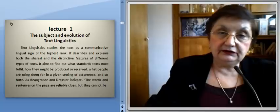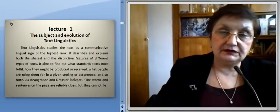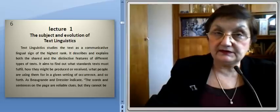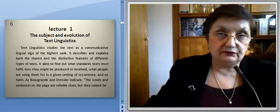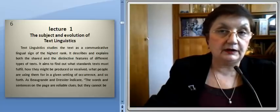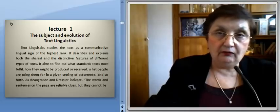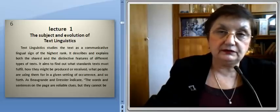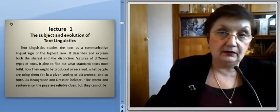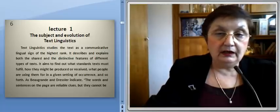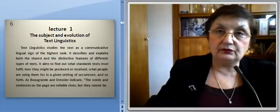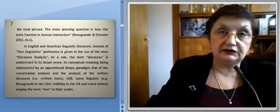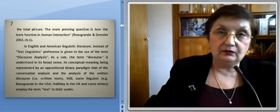The topic of Lecture 1 is The Subject and Evolution of Text Linguistics. Text linguistics studies the text as a communicative lingual sign of the highest rank. It describes and explains both the shared and the distinctive features of different types of texts. It aims to find out what standards text must fulfill, how they might be produced or received, or what people are using them for in a given setting. As Bogrand and Dressler indicate, the words and sentences on the pages are reliable clues, but they cannot be the total picture. The more pressing question is how texts function in human interaction.